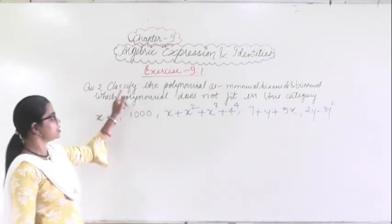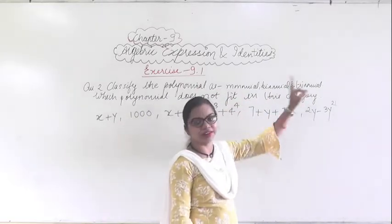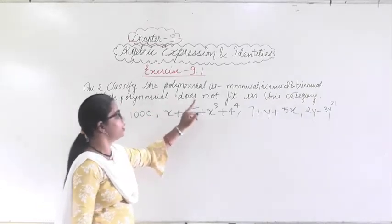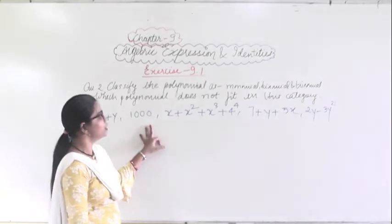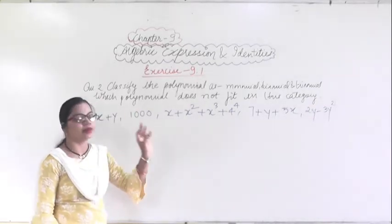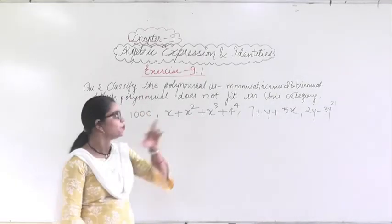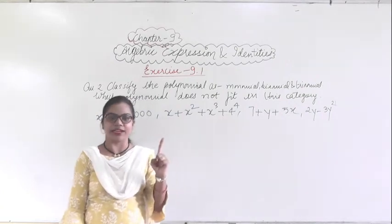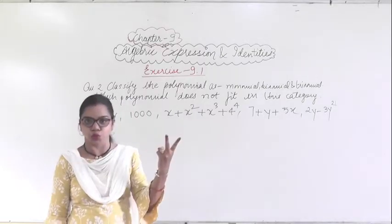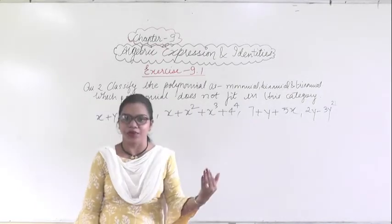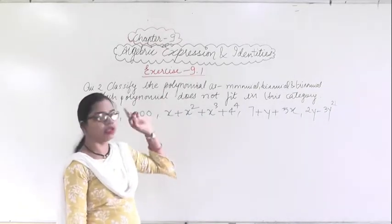In this portion it is saying: classify the polynomial as monomial, binomial, and trinomial. Which polynomial does not fit in any of these categories? Let me revise what I explained in the introduction video. Monomial means 1 term. Binomial means 2 terms. Trinomial means 3 terms. And more than 3 terms will come under polynomial.